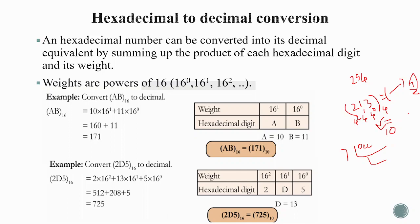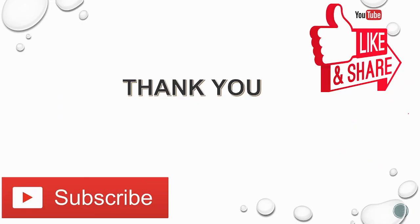We will also learn shortcut methods in the sixth class. To summarize: decimal to octal, decimal to binary, decimal to hexadecimal — and the reverse: octal to decimal, binary to decimal, hexadecimal to decimal. Learn the same two methods — positional weight and repeated division — and you can handle all conversions. Hope the concept is clear. Thank you.